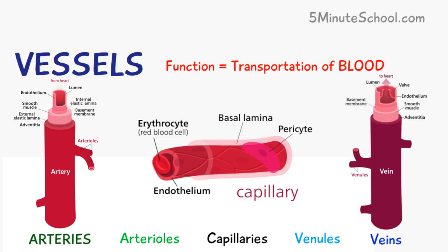Arteries eventually get smaller and form arterioles, and they carry oxygenated blood. The blood contained inside the arteries and arterioles is at a much higher pressure because it just came from the heart. So the walls of arteries and arterioles are usually a bit thicker to help withstand the pressure.